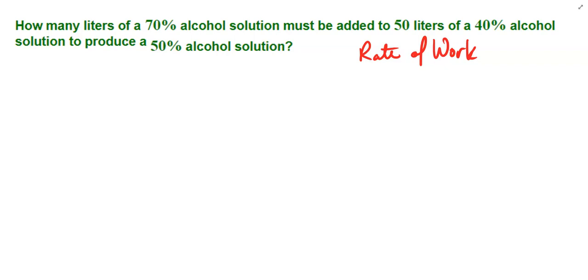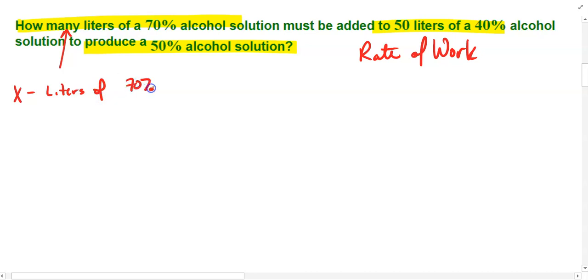As I read these problems, I see that we're trying to find how many liters of a 70% alcohol solution must be added to 50 liters of a 40% solution to produce a 50% alcohol solution. It may not be clear at first, but I think an argument can be made that our first variable, x, is going to represent how many liters of the 70% solution.